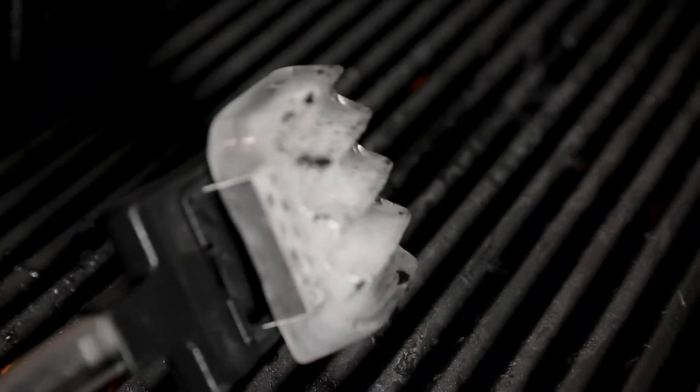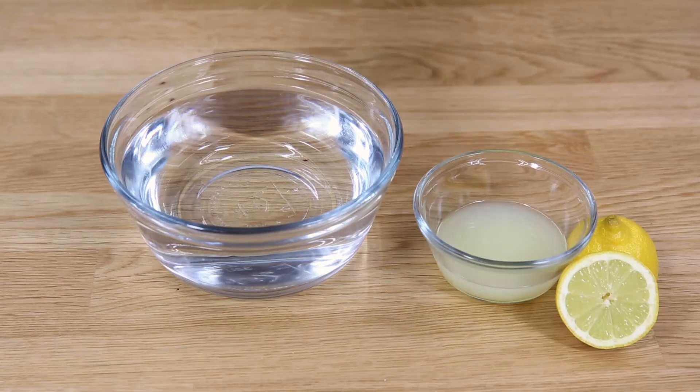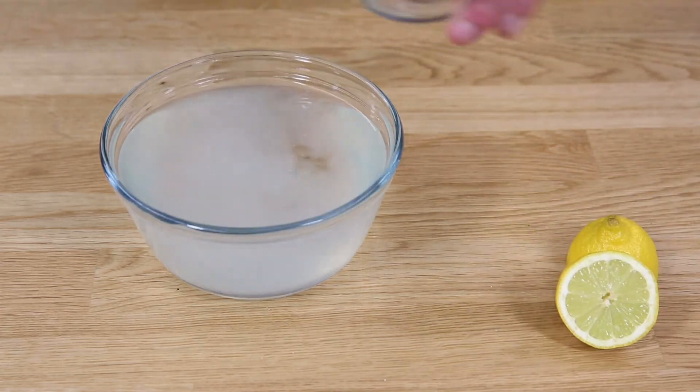The ice blot contours to the grid shape to remove food debris and leaves no residue. Just add a splash of lemon juice to the ice for an all-natural degreaser.